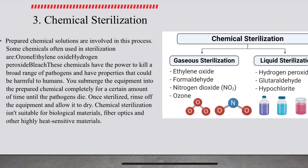Chemical sterilization involves prepared chemical solutions. Some chemicals often used in sterilization are ozone, ethylene oxide, hydrogen peroxide, and bleach. These chemicals have the power to kill a broad range of pathogens, but they have properties that could be harmful to humans. You submerge the equipment into the prepared chemical completely for a certain amount of time until the pathogens die. Once sterilized, rinse off the equipment and allow it to dry. Chemical sterilization is not suitable for biological materials, fiber optics, and other heat-sensitive materials. It can be applied as gas sterilization or liquid sterilization.